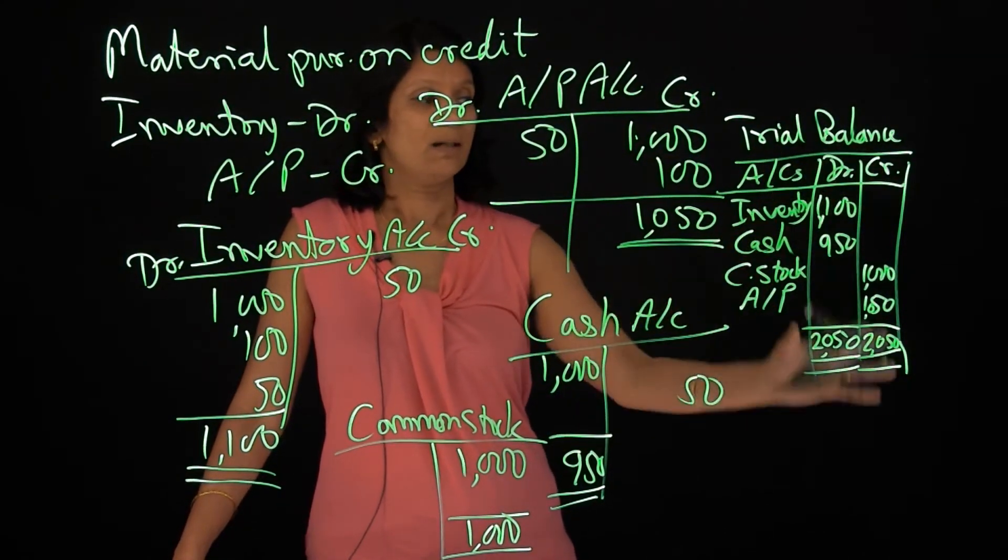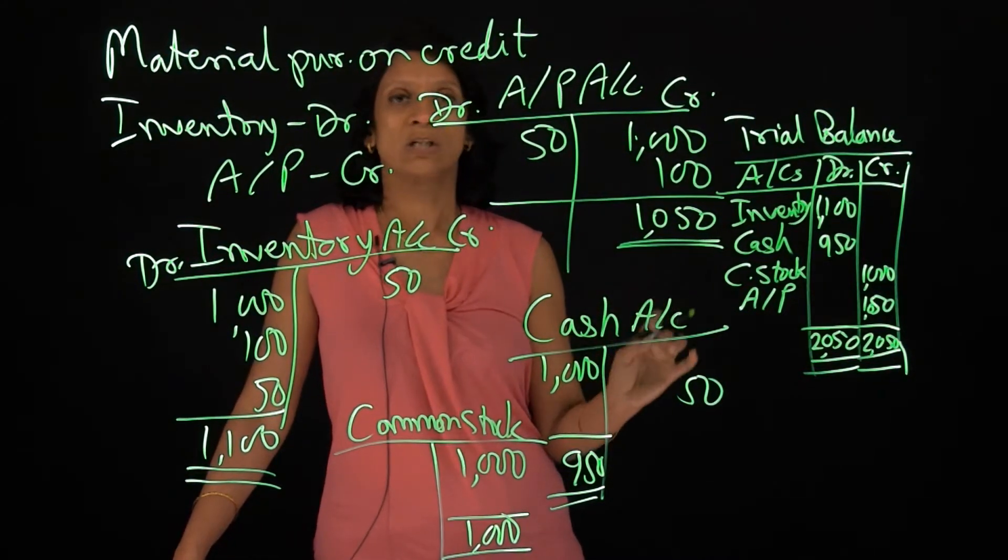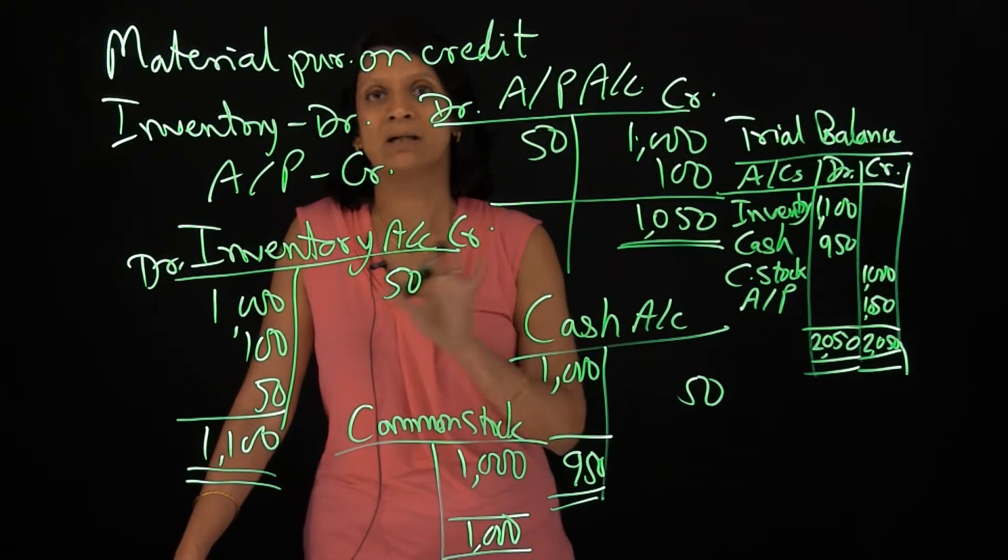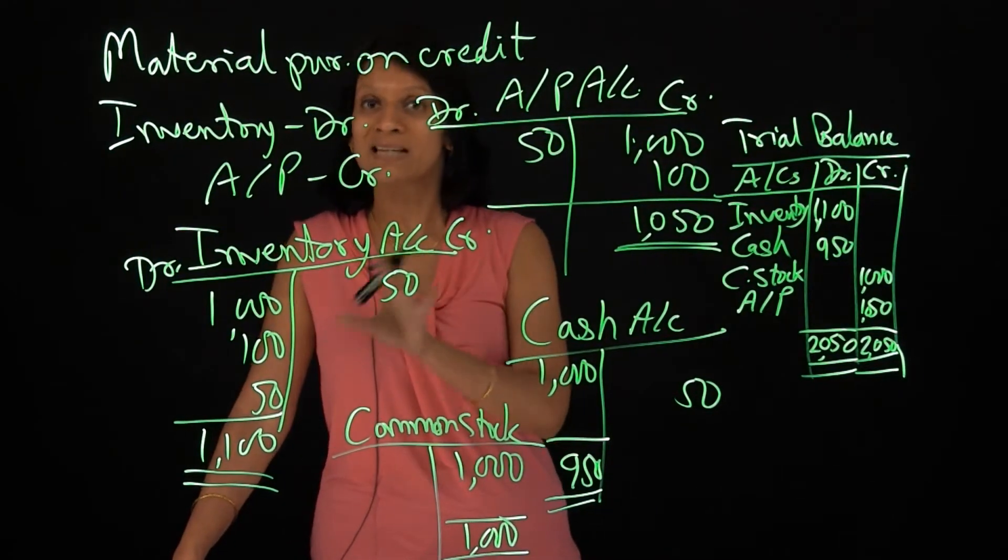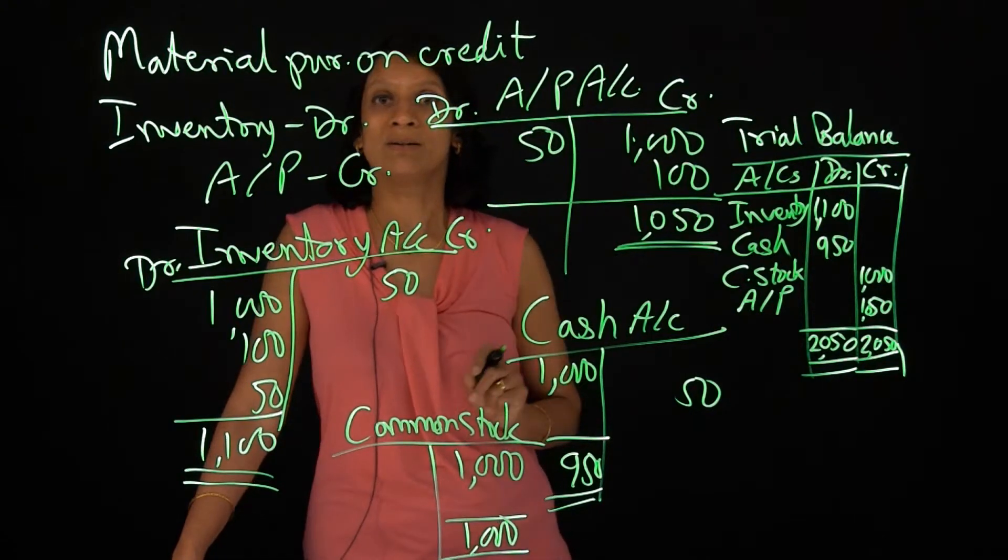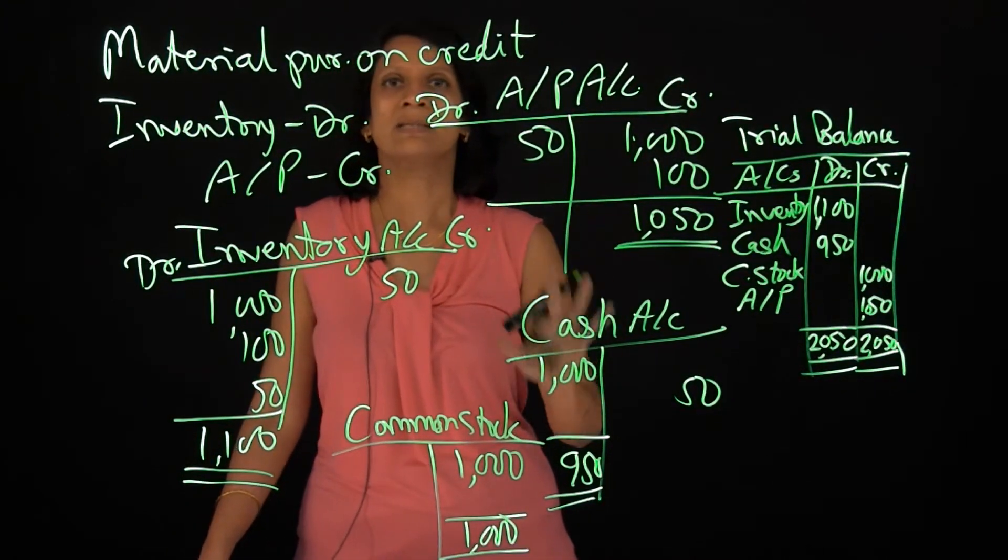Remember well, the trial balance matching exactly debit and credit totals does not guarantee that accounting is perfect. I might have done some compensating mistakes on both debit and credit side somewhere, but at least it gives me an idea that, okay, this is the picture.